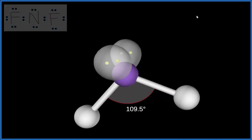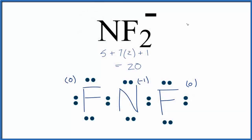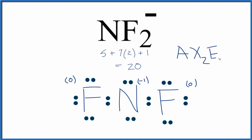Back to our Lewis structure. If you use the AXE notation to figure out the molecular geometry: A is the central atom — that's the nitrogen; X is the number of atoms attached — we have two fluorine atoms; and E is the number of lone pairs on the central atom — we have two lone pairs. So that gives us AX2E2. You look that up, and that's bent molecular geometry.